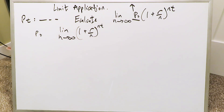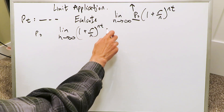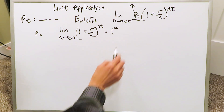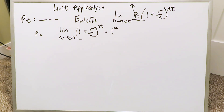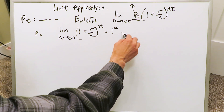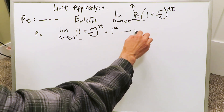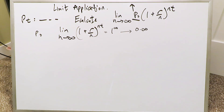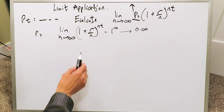When you put infinity in place of n, this thing zeroes out and you end up seeing one to the power of infinity, which is an indeterminate power type. When you have that, you want to convert it into an indeterminate product type — these are the indeterminate limit forms for which you have to do these necessary conversions.